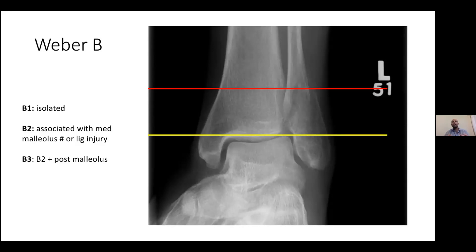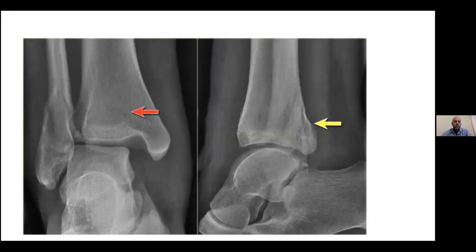There's a little more detail: B1 is isolated, B2 is when the medial malleolus is involved or with ligament injury not visible on X-ray, and B3 is B2 plus a posterior malleolus fracture. B2 and B3 are the ones we prefer to operate — in the ideal world, most definitely. These are the ankle fractures you fight for.